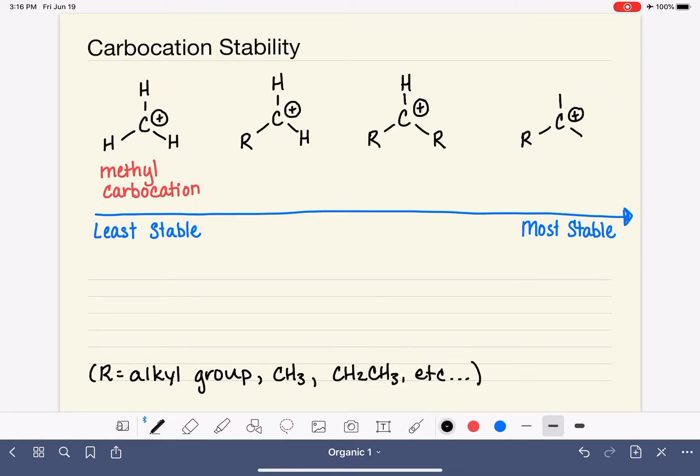Anytime we have one or two or three alkyl groups attached to the central carbon, it increases the stability. We have names for these different types of carbocations. Based on how many alkyl groups are attached to the central carbon, if we have one alkyl group attached, we call that a primary carbocation. If we have two, it is called a secondary. And if we have three, it is called a tertiary.